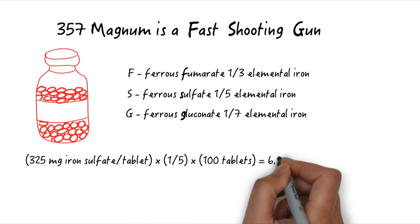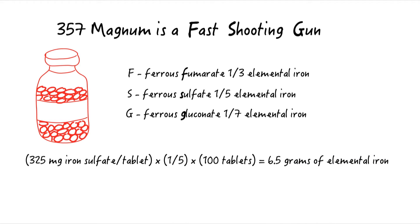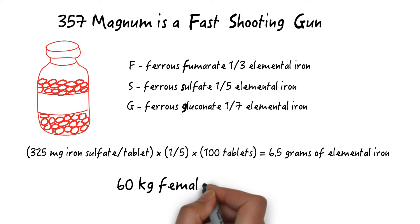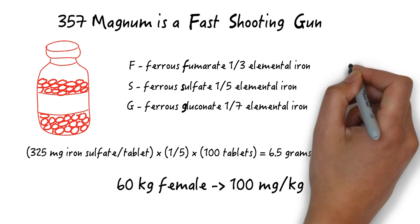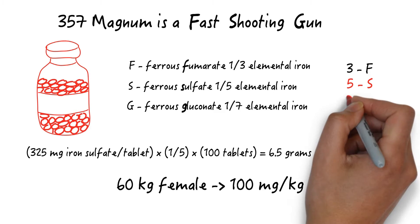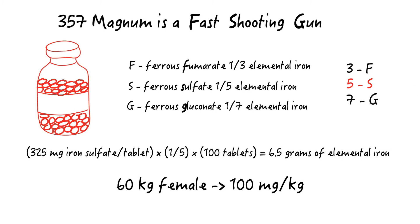As an example, this patient took tabs containing 325 milligrams ferrous sulfate. Because it's sulfate containing an S, we divide by five to obtain the iron content per tablet. If each pill contains 65 milligrams of elemental iron and she took 100 pills, she took 6.5 grams of iron. She's a 60 kilogram patient, so her dose is approximately 100 milligrams per kilogram. Note that iron carbonyl and iron polysaccharide contained in many newer iron formulations do not typically cause toxicity.